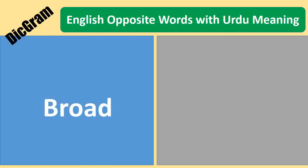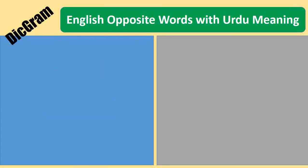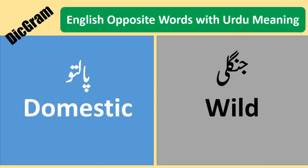Broad — Kshada. Narrow — Tunk. Domestic — Paltu. Wild — Jungli.